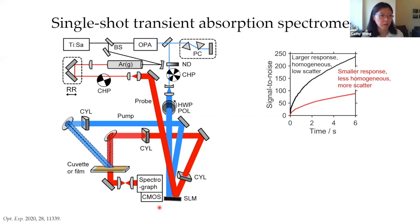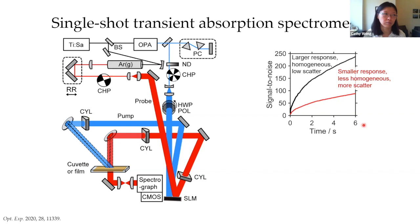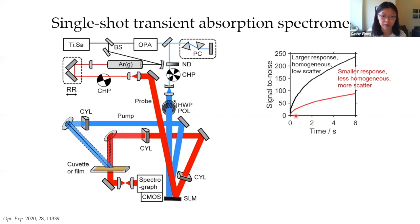We call it single-shot transient absorption because you can collect the whole transient in one shot, though we typically use more shots for better signal-to-noise. How long does that take? It depends on the sample's optical density and response, but it can be anywhere from a few seconds to less than a second for stronger samples. That's perfect — now we can actually measure our young nanocrystal samples to see what's going on.